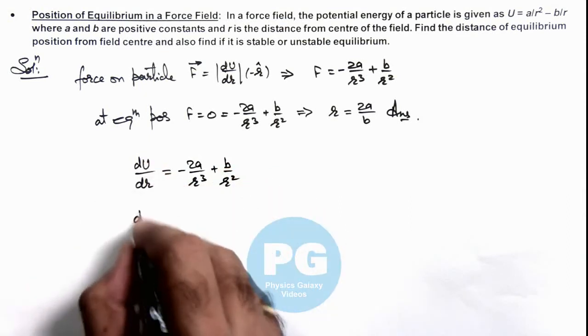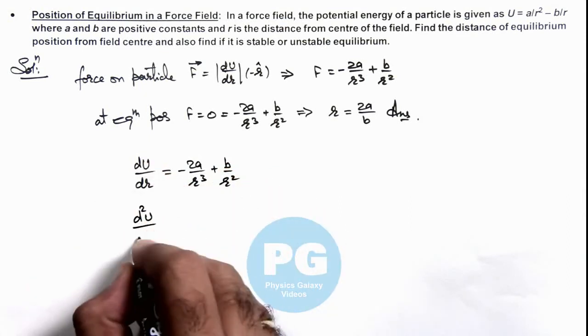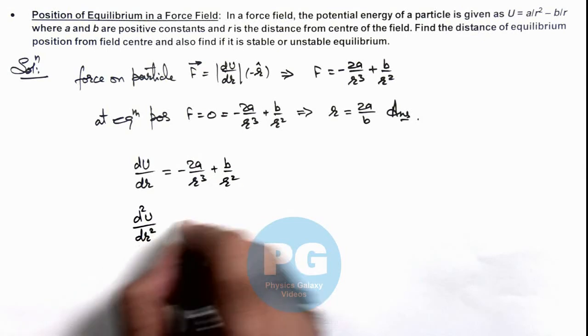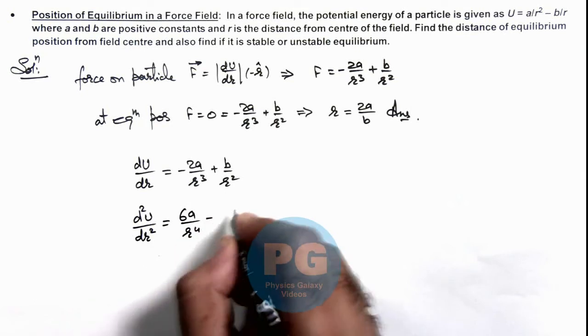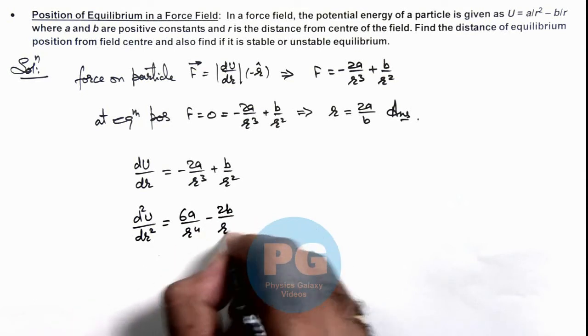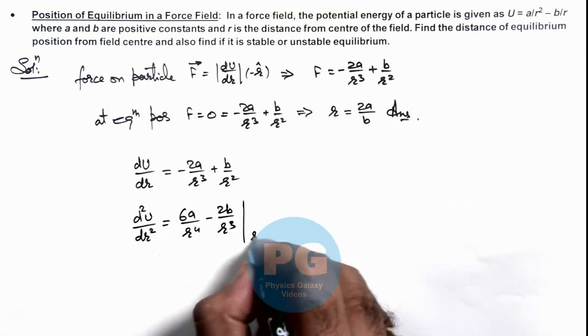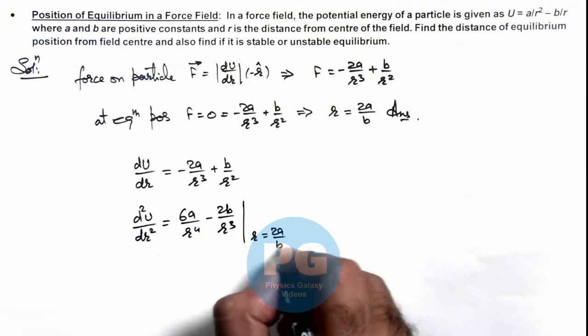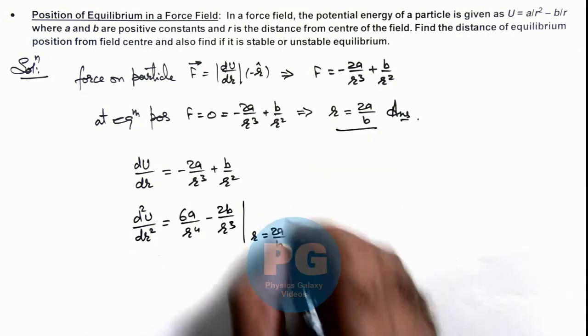Further differentiating to calculate the second derivative of potential energy with distance: d²U/dr² = 6a/r⁴ - 2b/r³. Now we calculate the value at r = 2a/b, the equilibrium position.